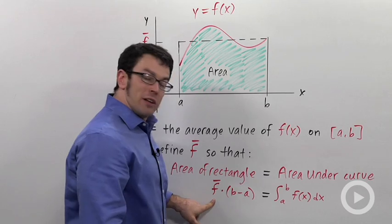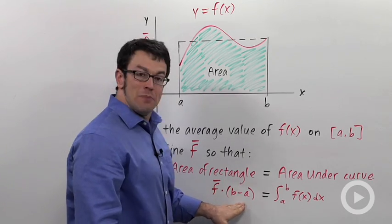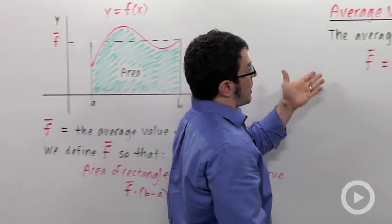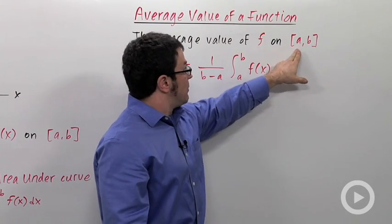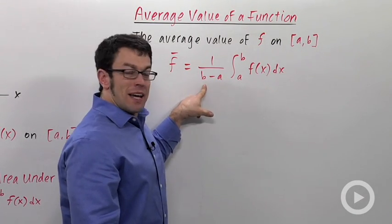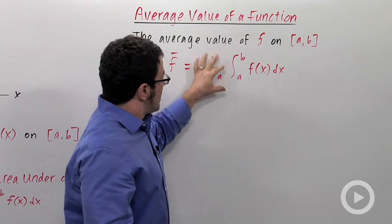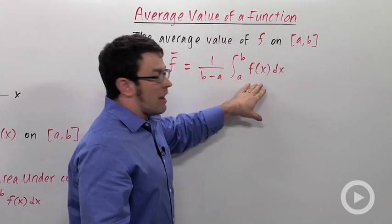All we have to do to get a formula for the average value is divide both sides by this. And that leads us to the average value of a function formula. The average value of a function f on the interval from a to b is 1 over b minus a, the width of the interval, times the integral from a to b of f of x.